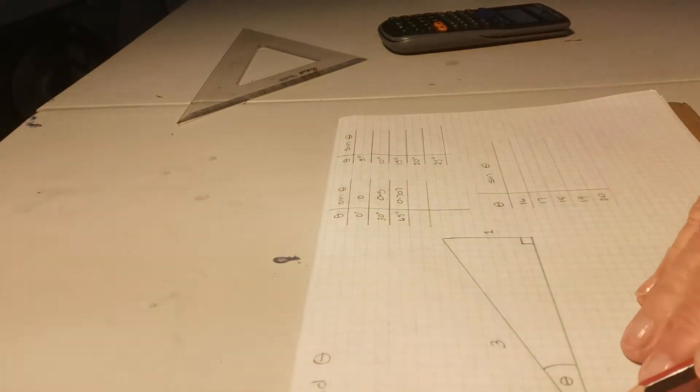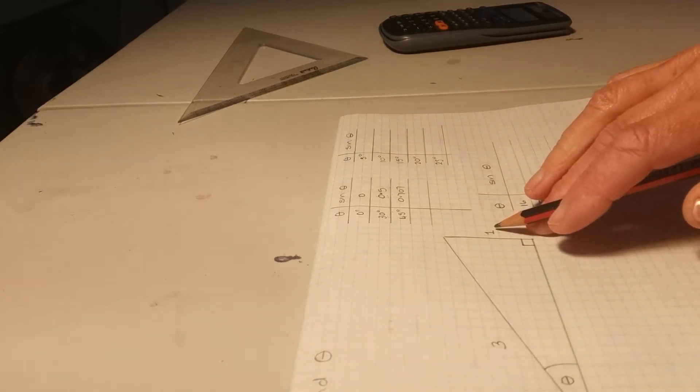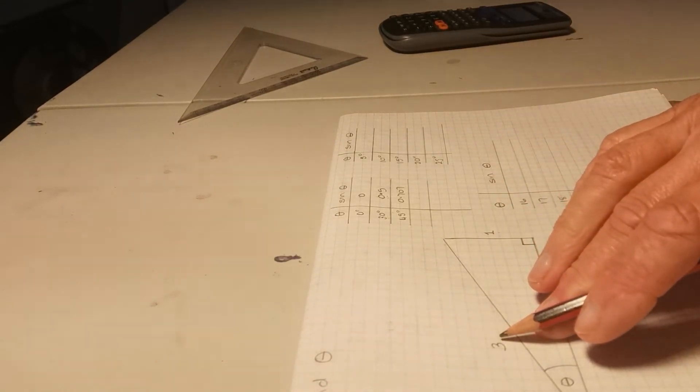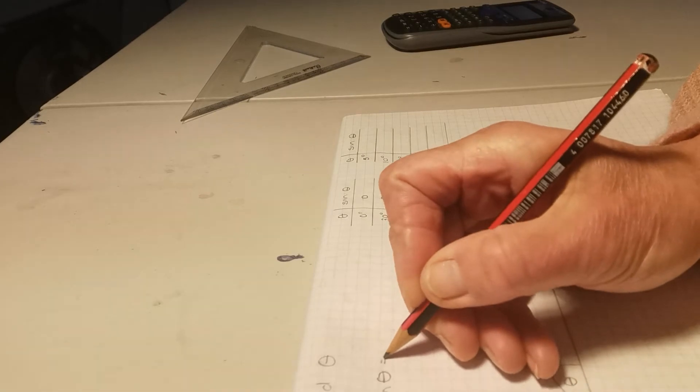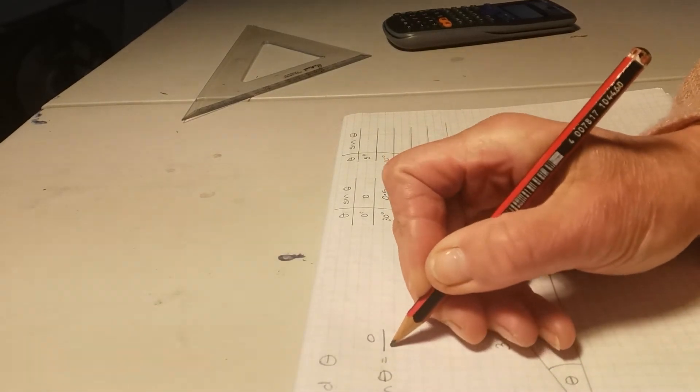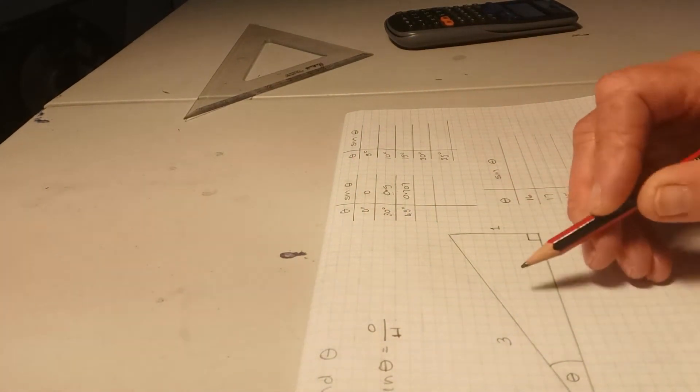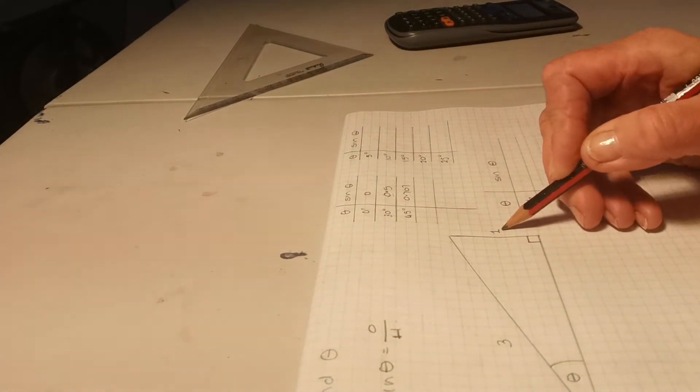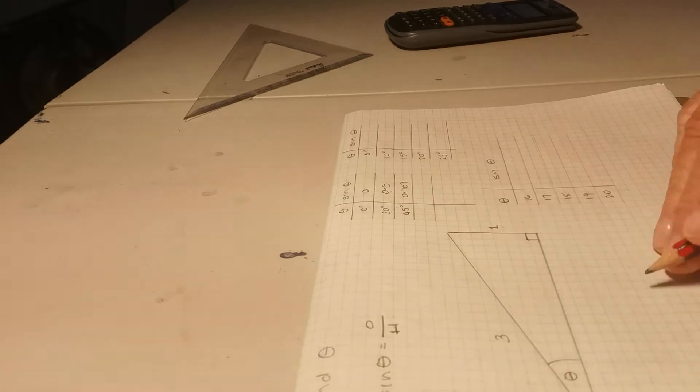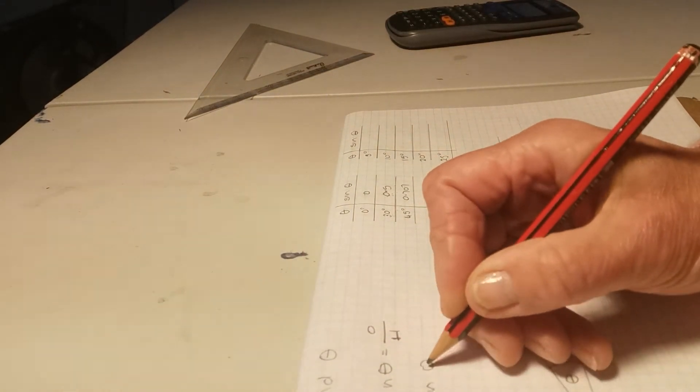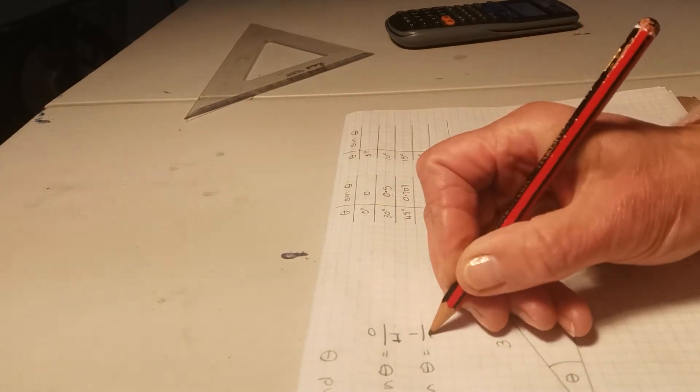So the first thing we need to decide is what trig ratio to use. If we have the opposite and the hypotenuse, we can use the sine ratio, because sine theta equals the opposite over the hypotenuse, and the sine ratio will link the value of theta with its opposite side length and the hypotenuse, which is opposite the right angle. So let's fill in the values. Sine theta equals the opposite, which is 1, over the hypotenuse, which is 3.